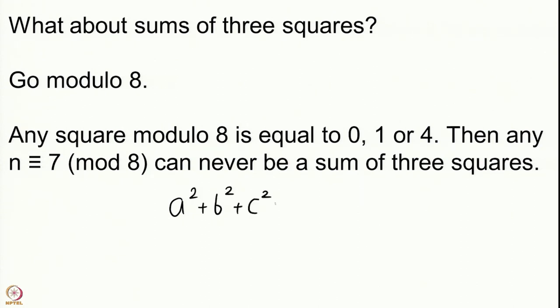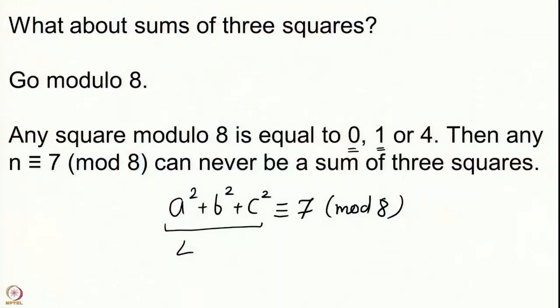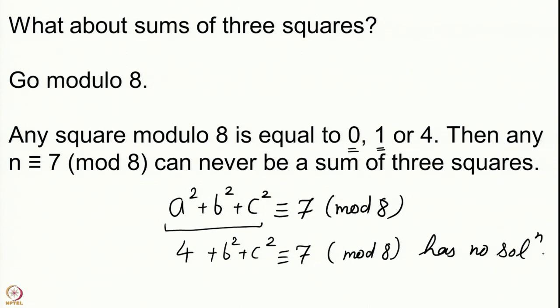Indeed, if a² + b² + c² ≡ 7 mod 8, clearly the squares cannot all come from {0,1} because the maximum you reach is 3. So at least one of them has to equal 4 mod 8. If one is 4, the remaining two squares from {0,1,4} give at most 4+1+1=6. Specifically: 4+0+0=4, 4+1+0=5, 4+1+1=6. There is no way to reach 7. So 4 + b² + c² ≡ 7 mod 8 has no solution, confirming that a number ≡ 7 mod 8 is never a sum of 3 squares.